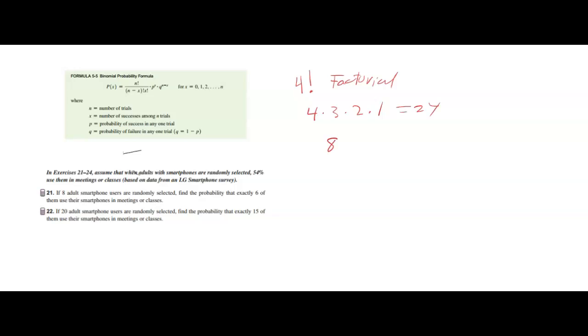If I have 8 factorial, that means 8 times 7 times 6 times 5 times 4 times 3 times 2 times 1. Now obviously if you leave off the 1 it doesn't make a difference, but the idea is that the factorial means you take the number in front and multiply by each integer below it until you get to 1.